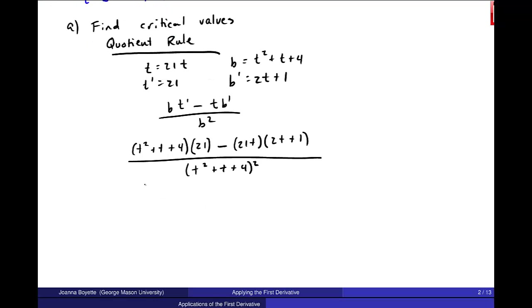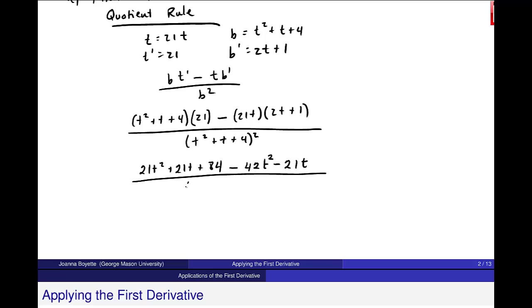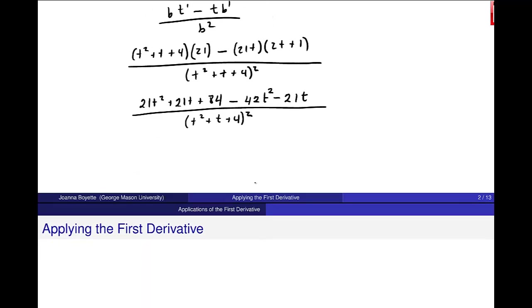So I get t squared plus t plus 4 times 21 minus 21t times 2t plus 1 over t squared plus t plus 4 squared. Okay, I'll multiply this numerator out. This is 21t squared plus 21t plus 84 minus 42t squared minus 21t, all still over this denominator, t squared plus t plus 4 squared.